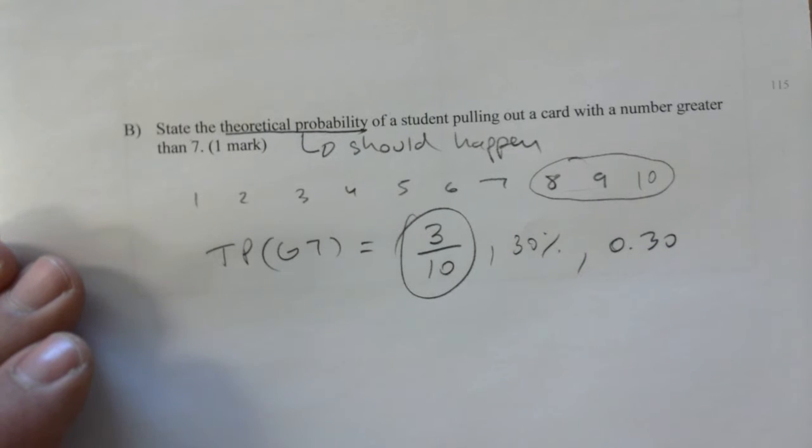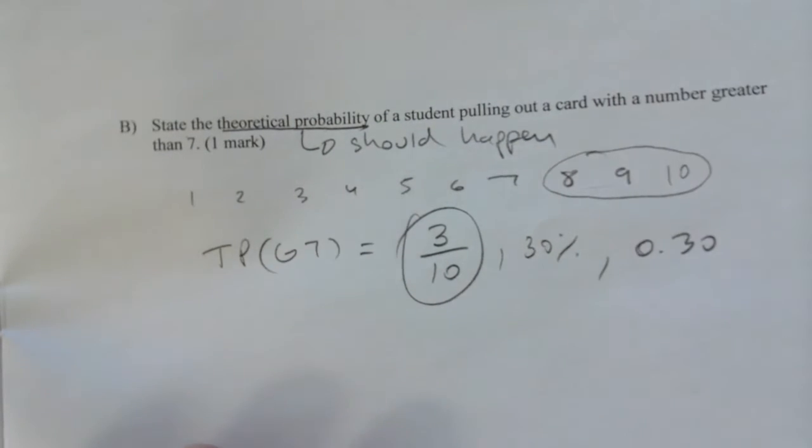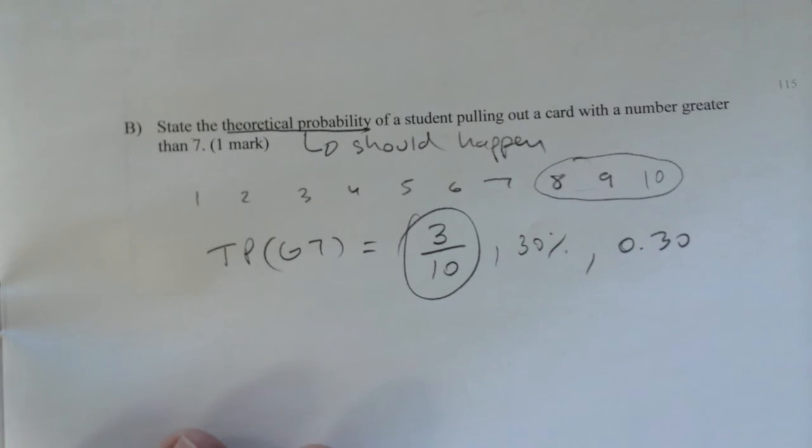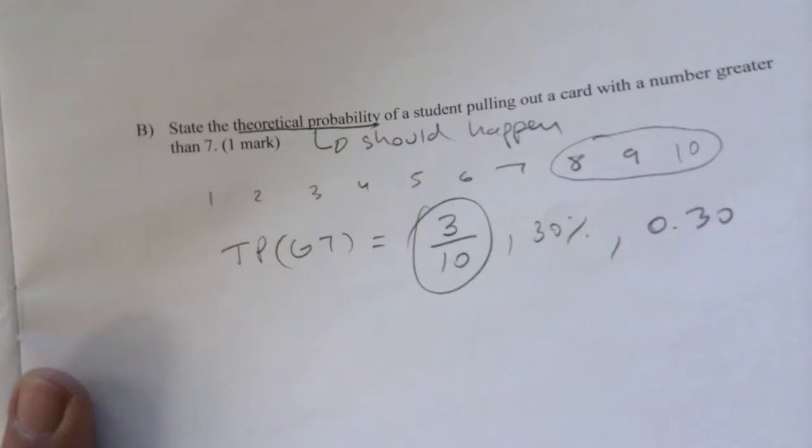The student or that experiment had too small of a sample size. But technically over time they should be the same. Not all things are. Like when it comes to elections, you will clearly have one candidate over the other. Even though, let's say you have two candidates, it's really 50-50. But if you do a poll, you will see that one is favored over the other.